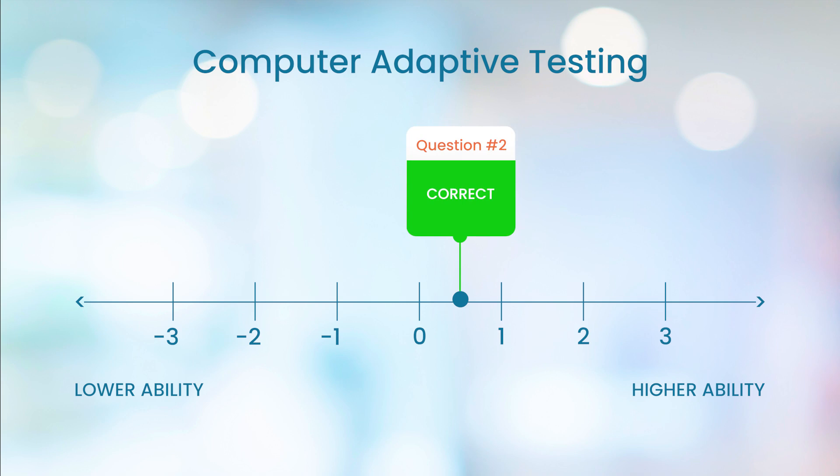If the candidate answers correctly again, our estimate of the candidate's ability goes up even more, since they just got an even harder question right. But something else has happened too. The uncertainty from before has also shrunk a little.